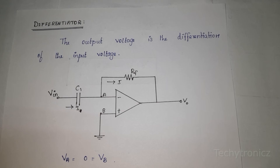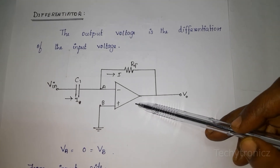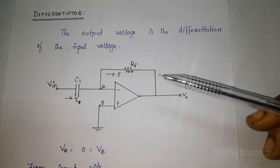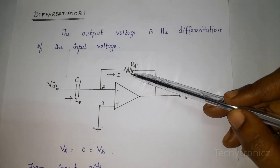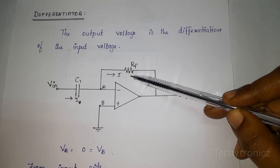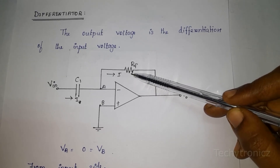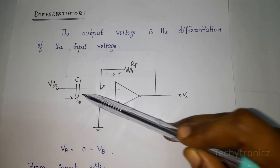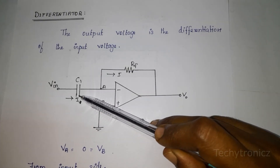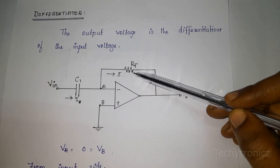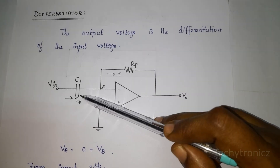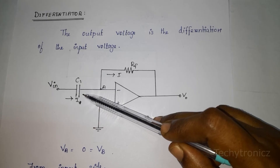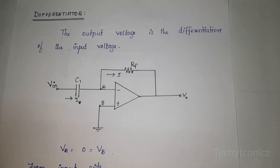Using the virtual ground concept — this is the circuit diagram of the differentiator. The circuit difference between differentiator and integrator is: in the integrator, capacitance is connected in the feedback side and resistance is connected at the input side. Here in the differentiator, resistance is connected in the feedback side and the capacitor is connected at the input side. That is the main difference between the circuit diagrams of integrator and differentiator.